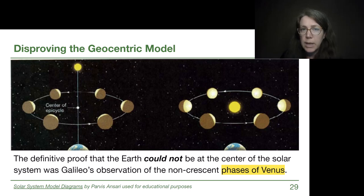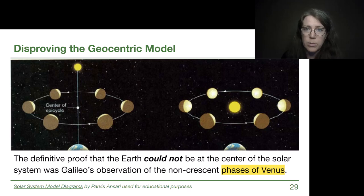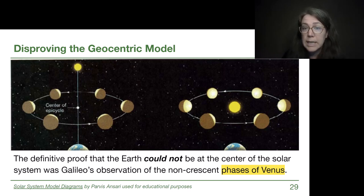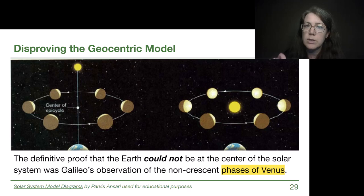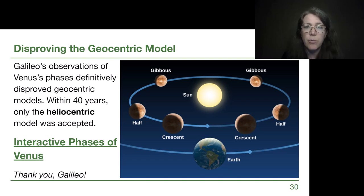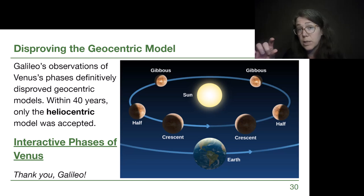The observation that completely threw out the geocentric model was when Galileo looked at Venus over several months. He could see that Venus had a crescent phase but also appeared more than half lit — half lit, and more than half, which we call a gibbous phase. That would not be possible in the geocentric model. This was the key experimental test that completely ruled out that incorrect hypothesis, and within 40 years only the heliocentric model was accepted. There is an interactive link for the phases of Venus that shows how Venus also appears larger near Earth in its crescent phase and smaller on the other side of the sun in its gibbous phase.